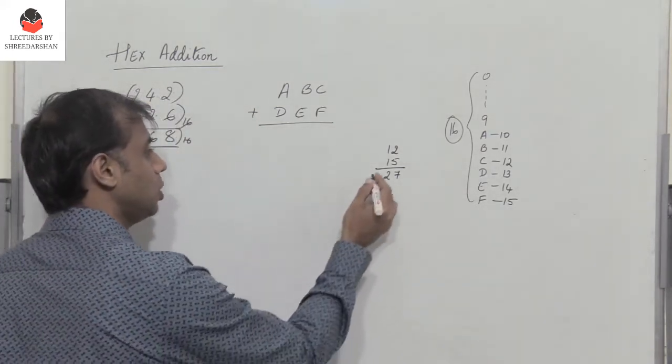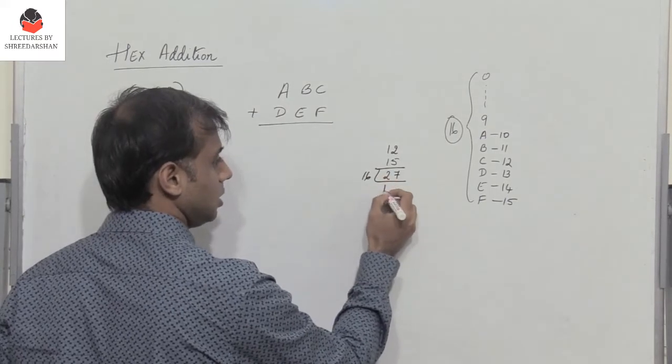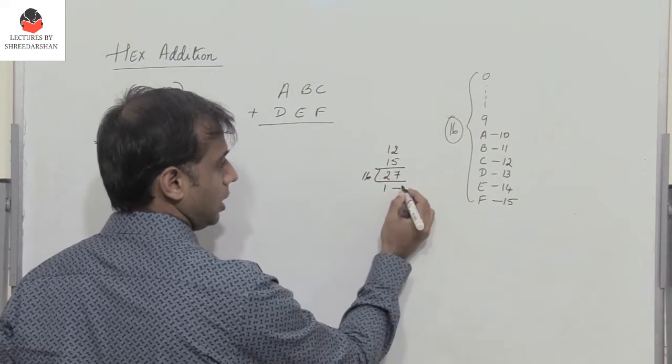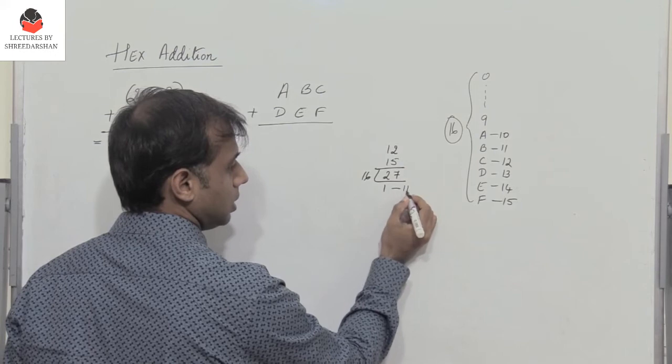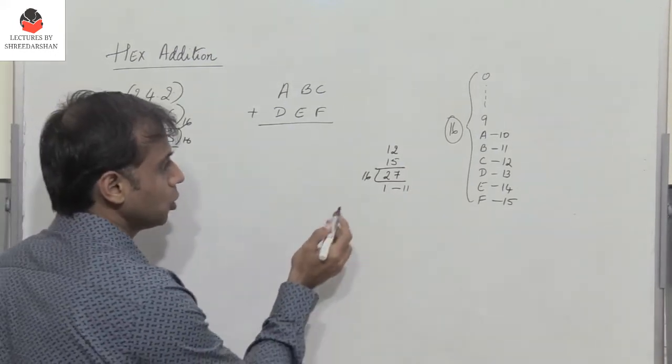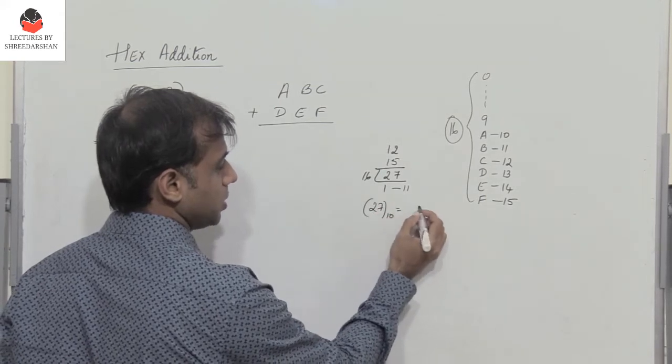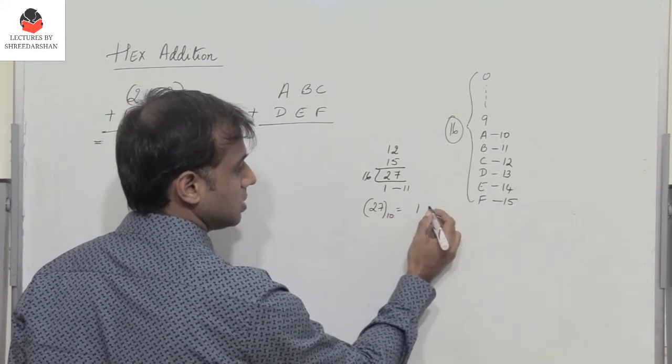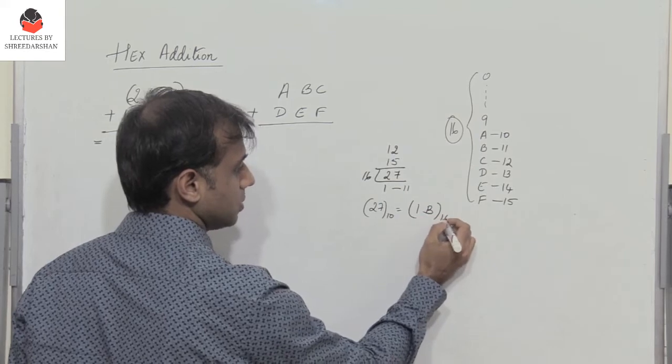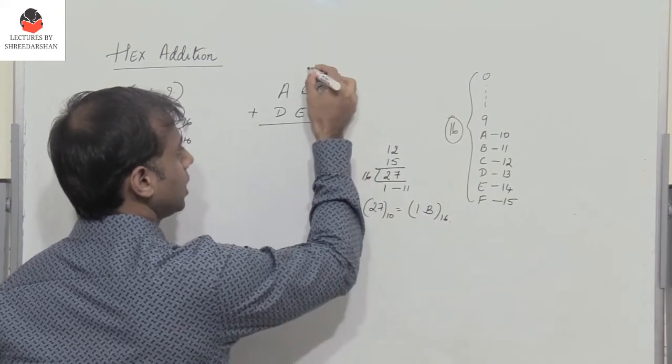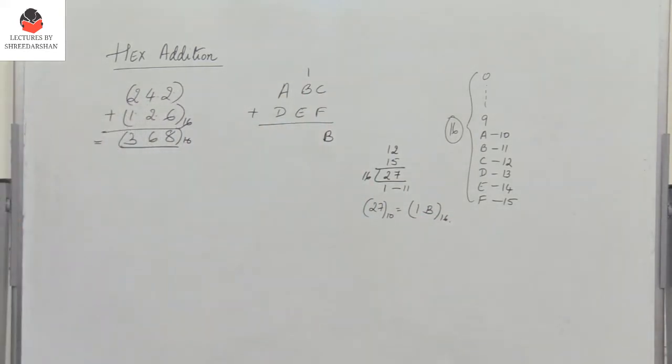So what do I do? I divide it by 16. I get 1 as the quotient and 11 as the remainder. Therefore, 27 decimal is represented as 1B in hex (11 is B). So you write B with a carry of 1.